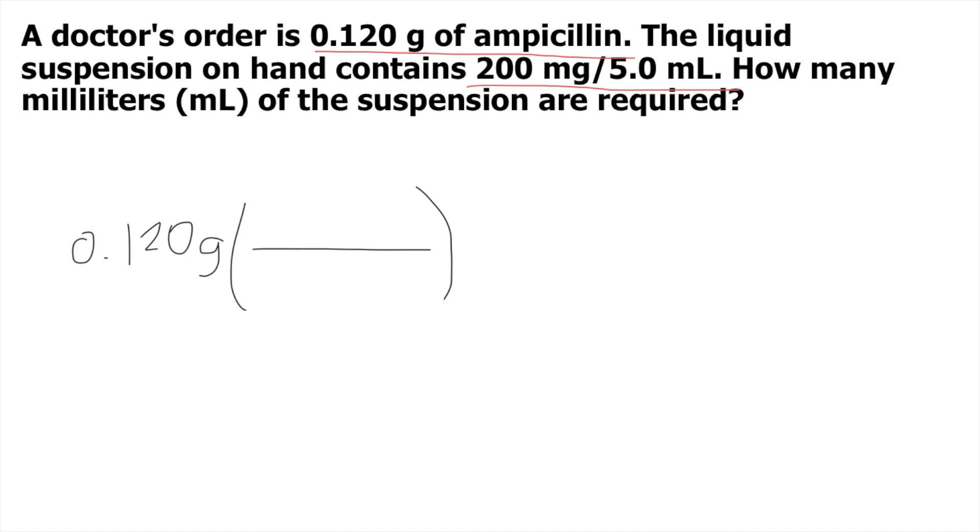How do you do that? We are given grams, so you put grams on the denominator. We want to convert to milligrams, so you put milligrams on top. We know that 1 gram is equivalent to 1,000 milligrams, so you put 1 gram below and 1,000 above. The grams cancel out, and now you have milligrams.